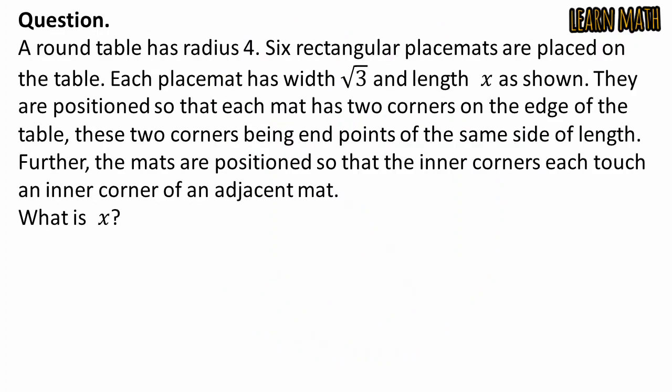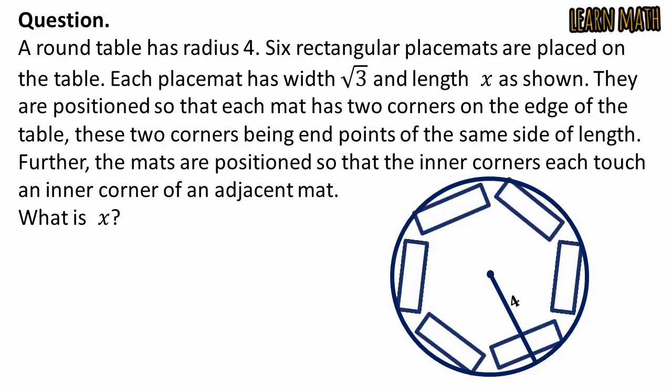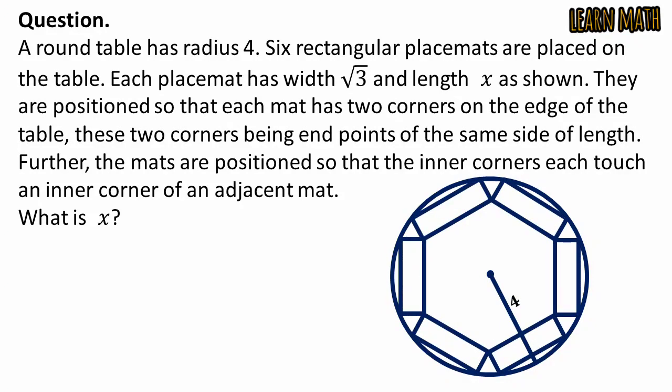The question is, a round table has radius 4. Six rectangular placemats are placed on the table. Each placemat has width square root of 3 and length x as shown. They are positioned so that each mat has two corners on the edge of the table, these two corners being endpoints of the same side of length.